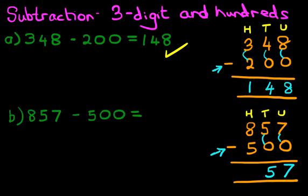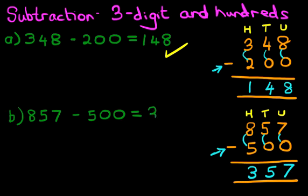Now we are doing the hundreds column. What is eight minus five? The answer is three. And we have our answer: eight hundred and fifty-seven minus five hundred is three hundred and fifty-seven.